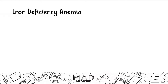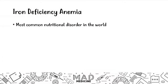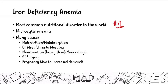Let's start talking about iron deficiency anemia. Iron deficiency is the most common nutritional disorder in the world — it is number one. It is a microcytic anemia. Iron deficiency anemia is going to present with a microcytic anemia presentation, and there are many causes, all of which you need to know for Step 1.